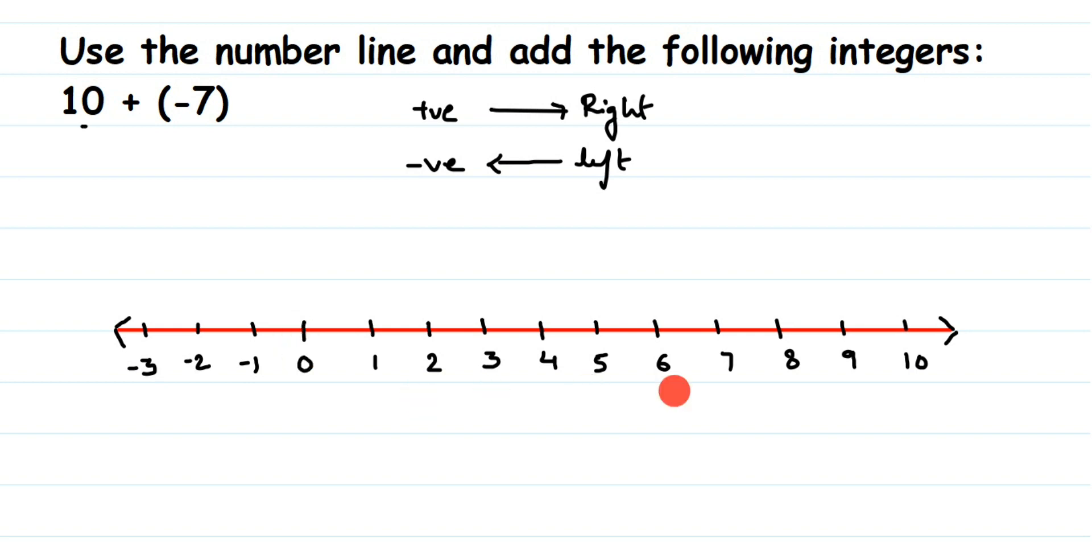You can take zero anywhere on the number line. It's not necessary to take it at the center only. So zero is here and I have to locate 10 first.